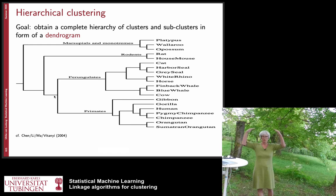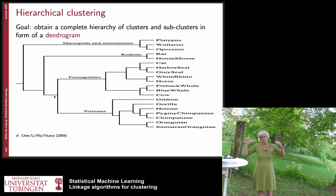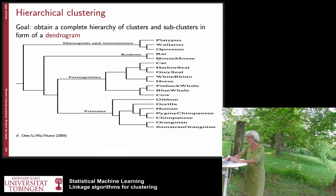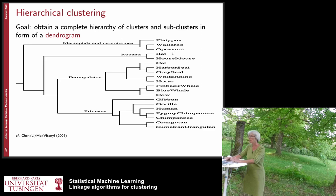A dendrogram — typically you read it from top to bottom, but on the slide it's from left to right — consists of a hierarchy of nested clusters. Clusters are nested inside each other, and smaller clusters can be merged to form larger clusters. For example, in this image you have a cluster of different animals. You have the rat and the house mouse, each being their own cluster on the right-hand side, the finest granularity. You can merge them to give the cluster of rodents, for example.